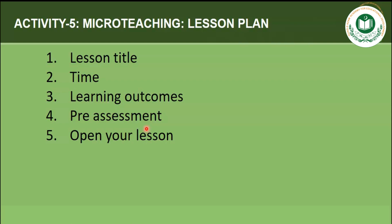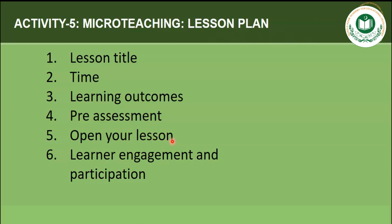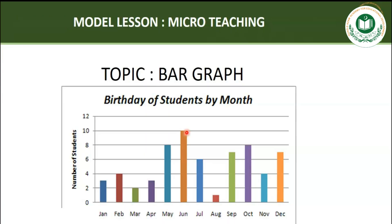The fifth step is Opening the Lesson, in which the teacher gains the attention of students and motivates them. The sixth step is Learner Engagement and Participation — the teacher describes or specifies learning activities and interactions planned. In the seventh step, Post-assessment, the teacher assesses whether learning objectives have been met. The last step is Summary, in which the teacher asks the class to think about whether they can now solve real-life problems involving the given topic.